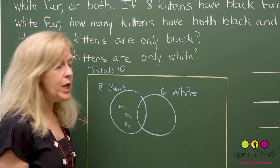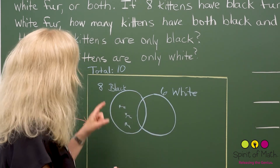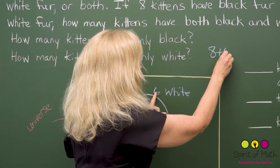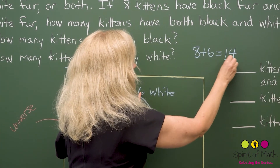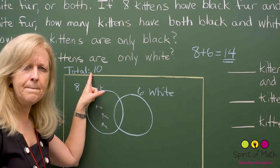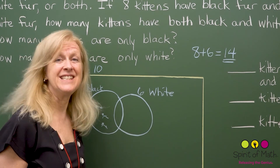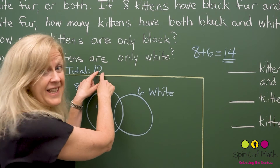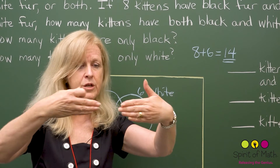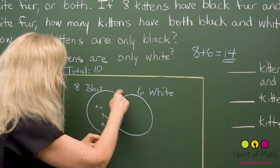Now you've got eight that goes in this circle and six that goes in the other. Watch what happens: if you add eight plus six, you get 14 kittens — but there are only 10 kittens total. So what's happened? There aren't 14 kittens, but it looks like there might be. In fact, some of them have both black and white, so they're overlapping — they're counted in both the white circle and the black circle.